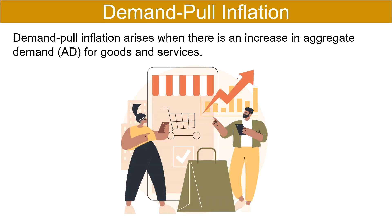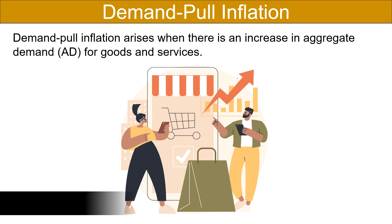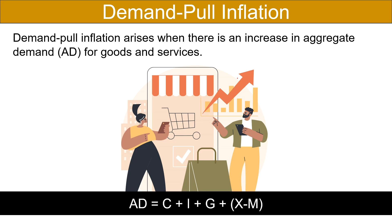Let's talk about demand-pull inflation. Demand-pull inflation arises when there is an increase in the aggregate demand for goods and services. Aggregate demand is the quantity of goods and services demanded by households, firms, and government plus net exports. Net exports is equal to the difference between exports and imports. In short, aggregate demand equals consumption plus investment plus government spending plus exports minus imports. An example of demand-pull inflation is the increase in gasoline prices in America in mid-2022.